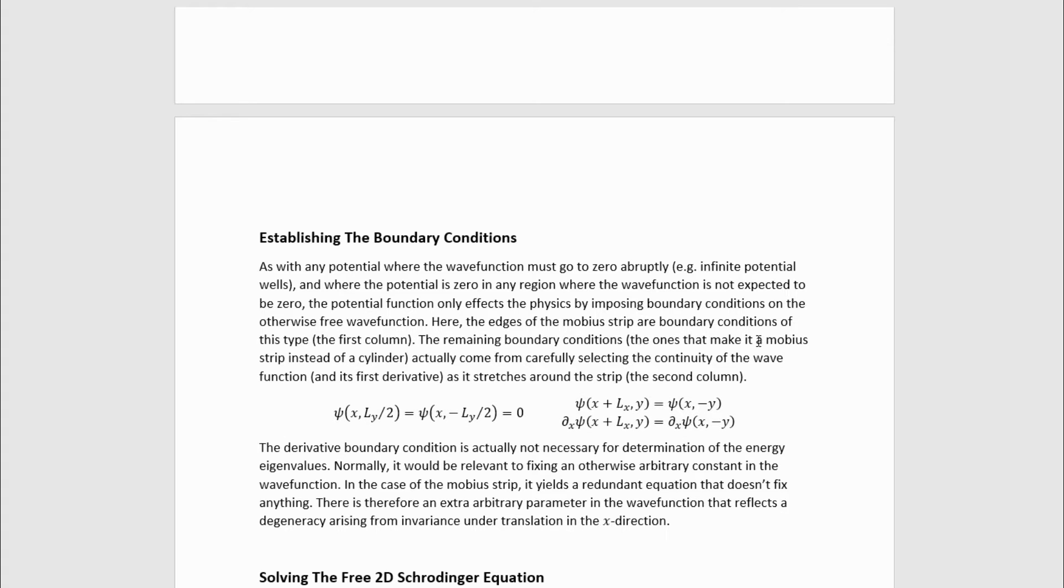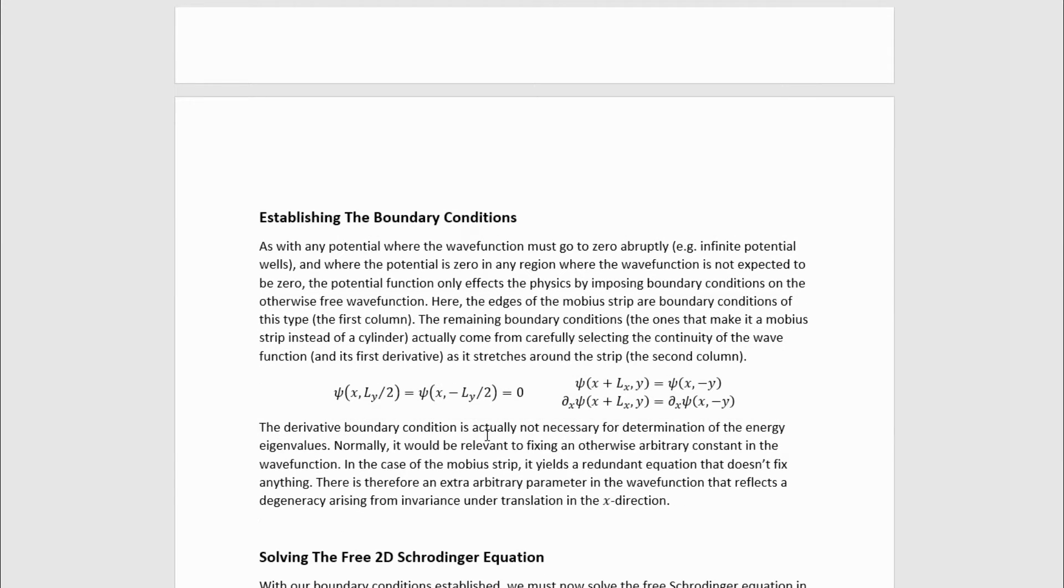The remaining boundary conditions, the ones that make it a Mobius strip instead of, say, a cylinder, actually come from carefully selecting the continuity of the wave function and its first derivative as it stretches around the strip. Specifically, these considerations yield the second column boundary conditions. The derivative boundary condition is actually not necessary for determination of the energy eigenvalues. Normally, it would be relevant to fixing an otherwise arbitrary constant in the wave function. In the case of the Mobius strip, it yields a redundant equation that doesn't fix anything. This is therefore an extra arbitrary parameter in the wave function that actually reflects an infinite degeneracy arising from invariance under translation in the x-direction.